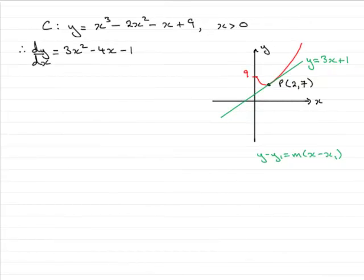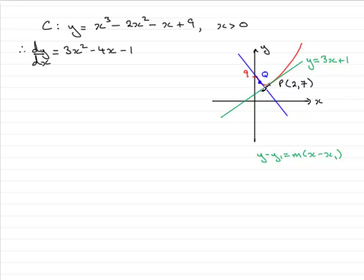In this part of the question, we're told that there's a point Q on the curve C — that's the red graph here — where the tangent at Q is perpendicular to the tangent at P. So essentially there's going to be a point here, let's call that Q, where if we were to draw the tangent at Q, coming down through here, the green line and the blue line would intersect at right angles, 90 degrees.